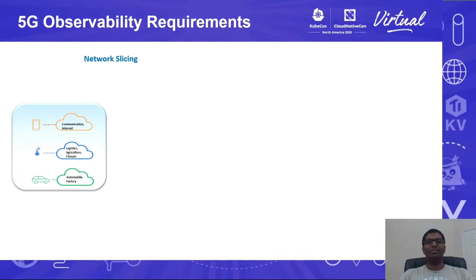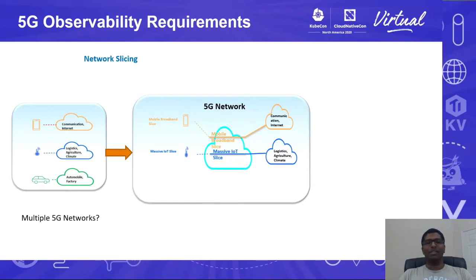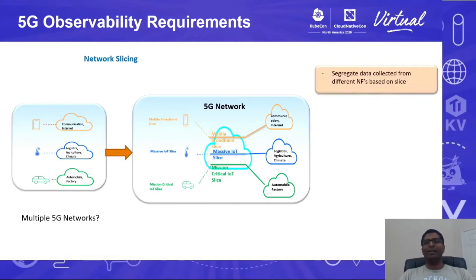There should be zero latency for mission-critical applications. Since it's not possible to provide separate 5G networks for each application type, the solution is network slicing, where the underlying 5G network is logically sliced and depending on the application's subscription and other parameters, they are allowed to use the network functions that are part of a particular slice. This brings our next requirement: we should be able to segregate data collected from different network functions based on the slice from which it is coming.